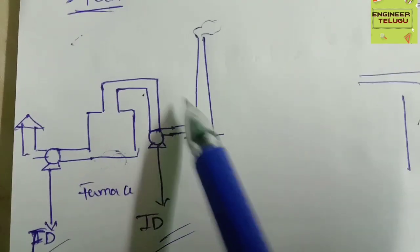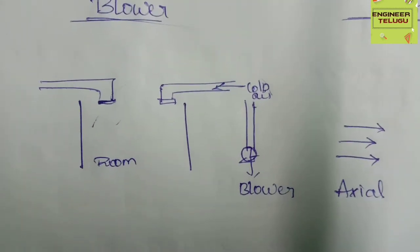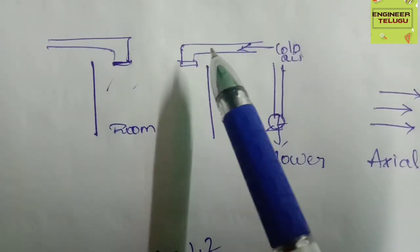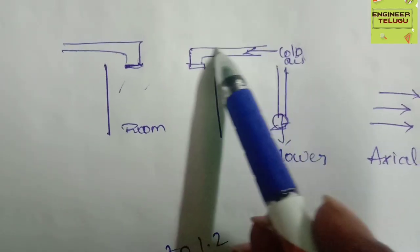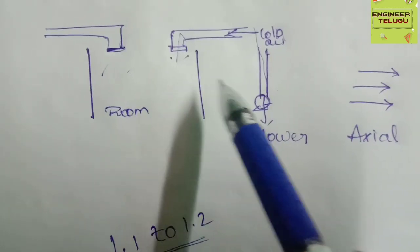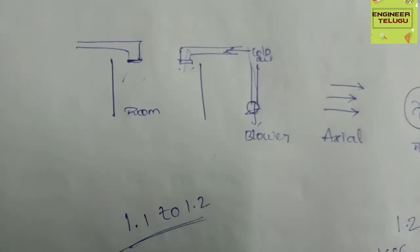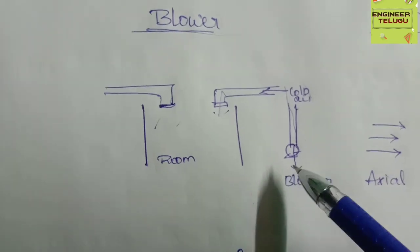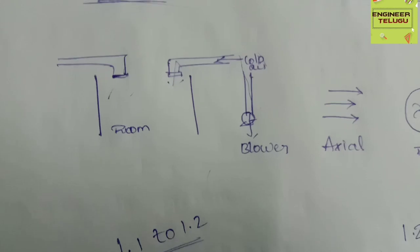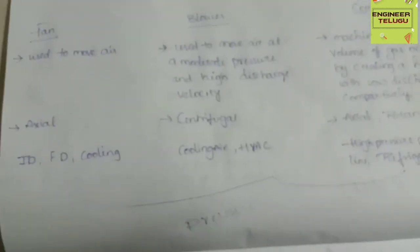For air conditioning systems and ventilation, we have to use a blower. In a room with a central AC, cold air is blown at some moderate pressure and high velocity. We have to use a blower. The design will change and it is referred to as a blower.